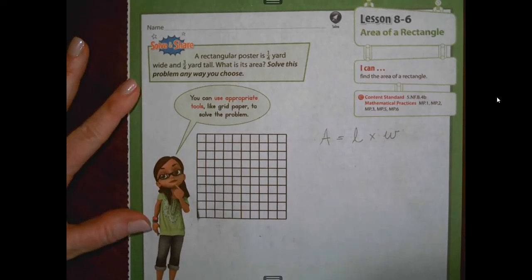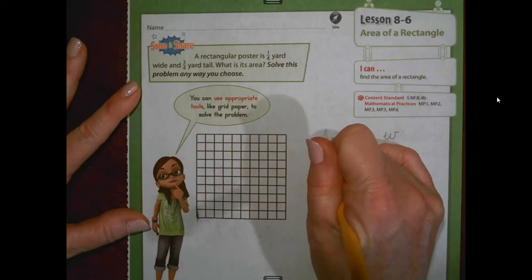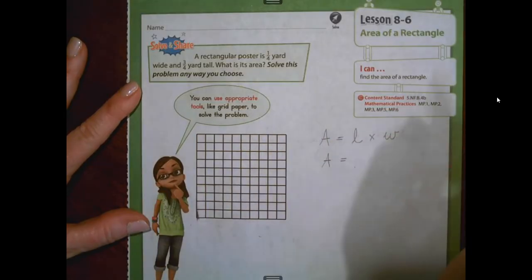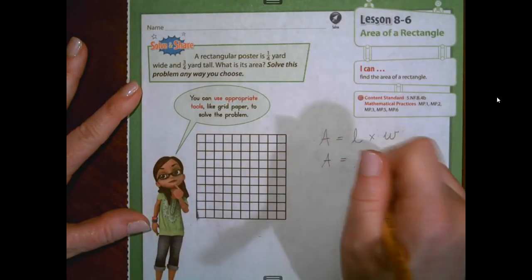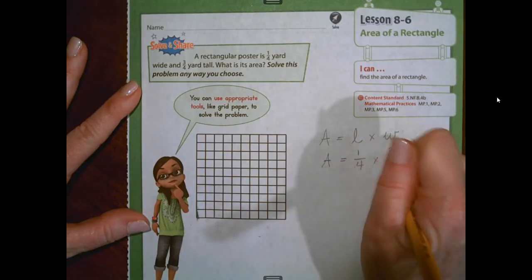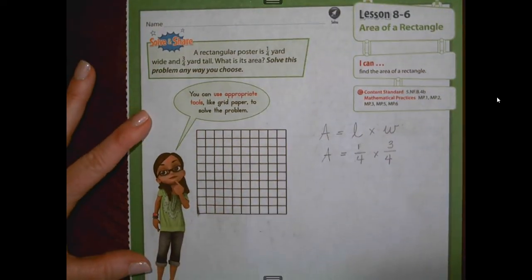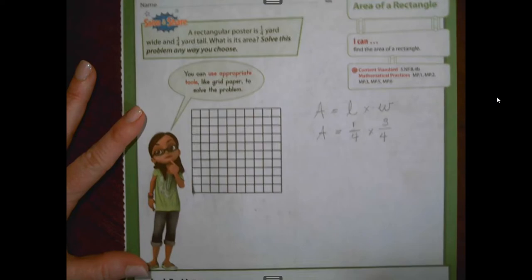A rectangular poster is one-fourth yard wide and three-fourths yard tall. What is its area? So when we look for area, we are just measuring or multiplying the two lengths. One-fourth times three-fourths.